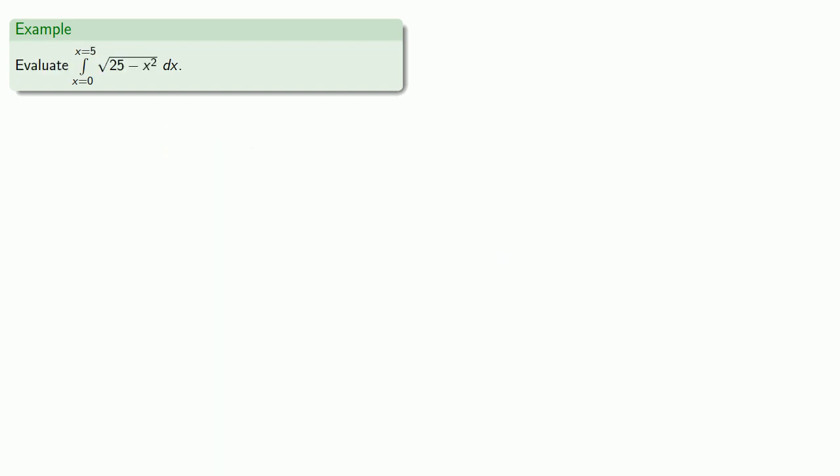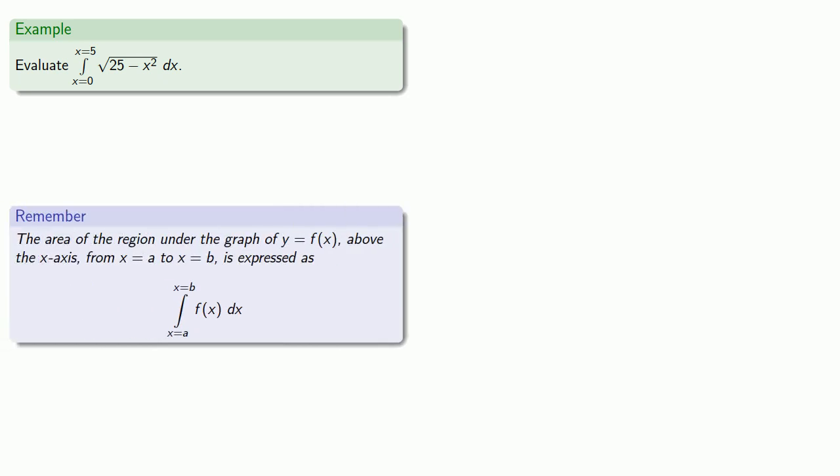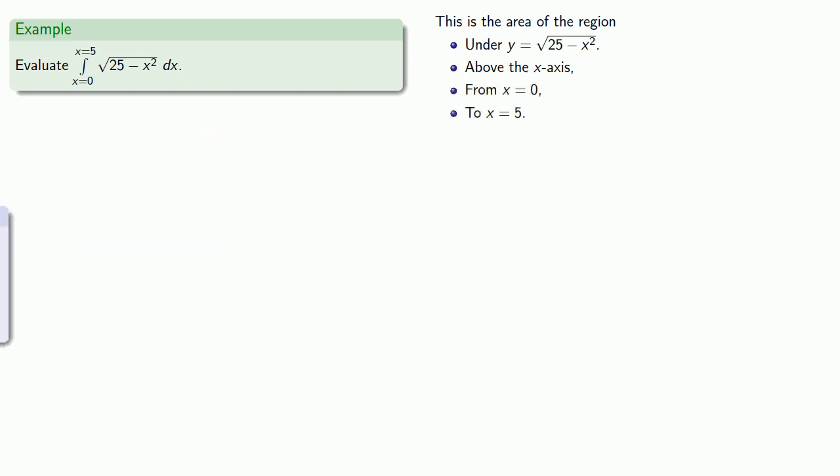How about this definite integral? So again, we're describing a region that's under something, above something, from someplace, to someplace. And in this form, the under and the above are easy to pick off, and the from and the to are just as easy. The only thing that's difficult is trying to figure out what our region is going to describe.